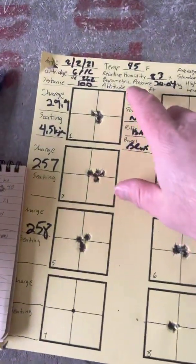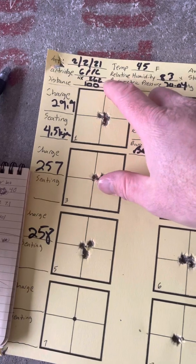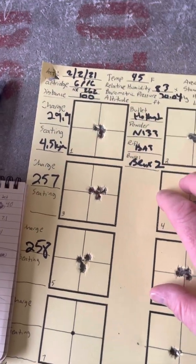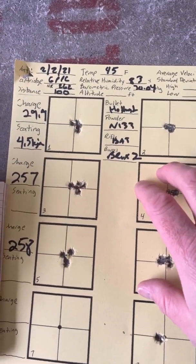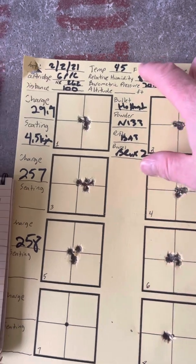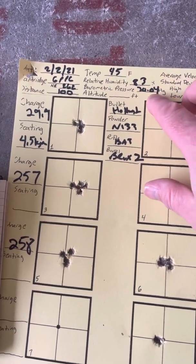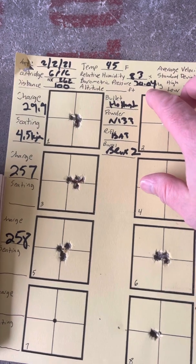We took our 6 PPC out with a 262 neck chamber at 100 yards distance. It was shot in about 45 degree weather, 83% relative humidity, 30.04 barometric pressure.